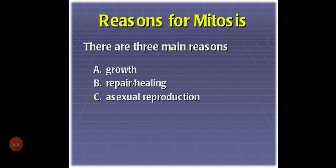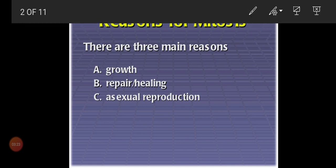Why should mitosis proceed in cells? There are three main reasons. First one: growth. If a plant, animal, or human being is growing, how is that growth occurring? It's occurring because cells keep on dividing every day, continuously producing new cells. Because of that only, growth is occurring. So for growth, the cell should undergo division.